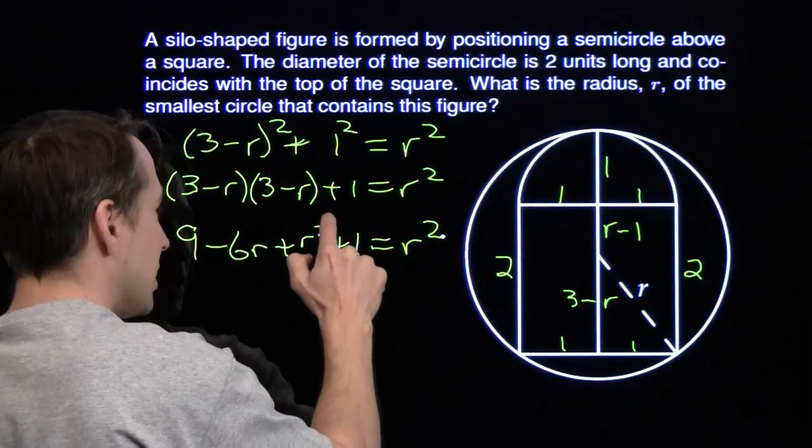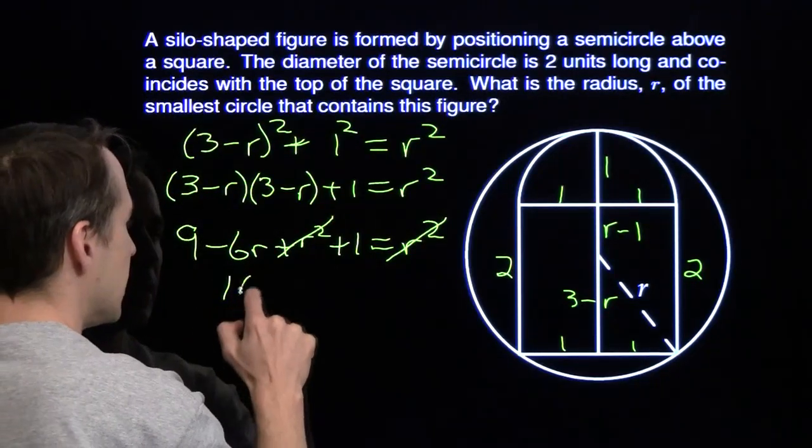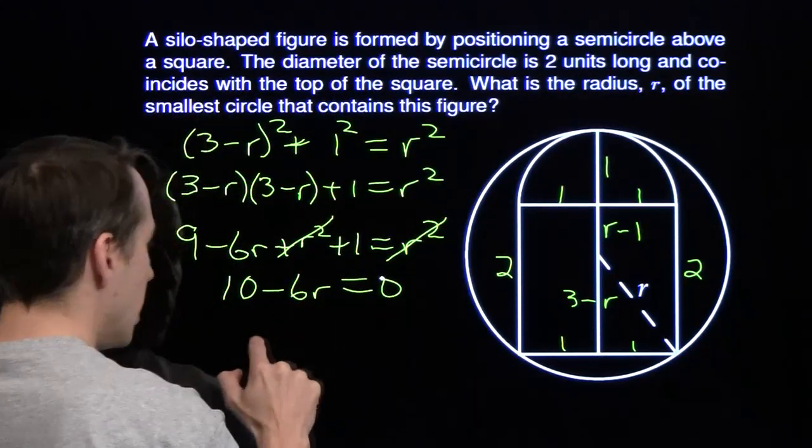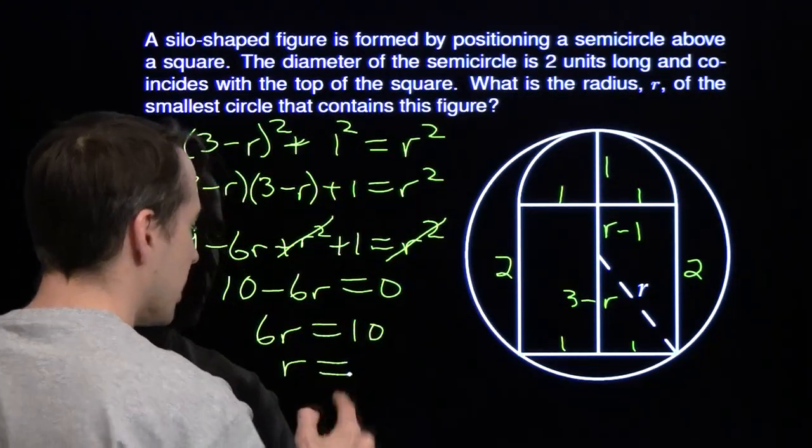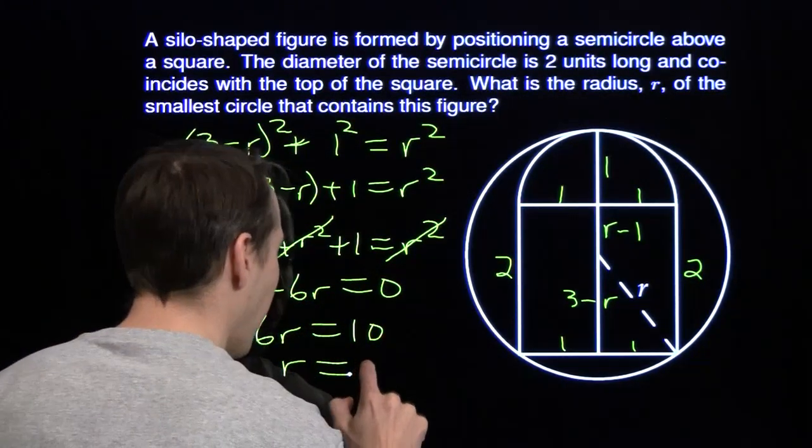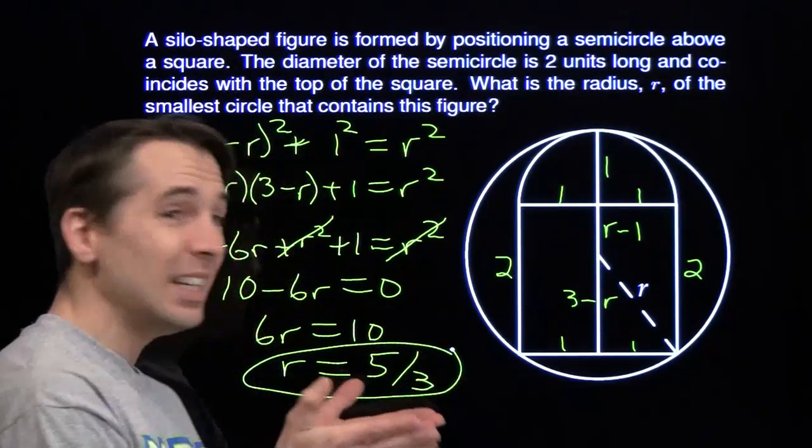Plus 1 equals r squared. Subtract r squared from both sides. These are going to cancel. I'm left with 10 minus 6r equals 0. So 6r equals 10. Divide both sides by 6, then simplify. I get r is 5 thirds. And we are done.